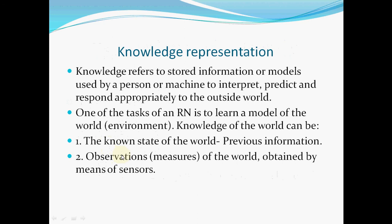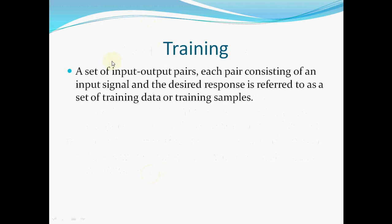Knowledge representation: knowledge refers to the stored information or models used by a person or machine to interpret, predict, and respond appropriately to the outside world. One of the tasks of the network is to learn a model of the world environment. Knowledge of the world can include the state of the world, prior information, observations, measured data obtained by means of sensors. Training consists of a set of input-output pairs — each pair consists of an input signal and a desired response — referred to as a set of training data or training samples. Thank you.